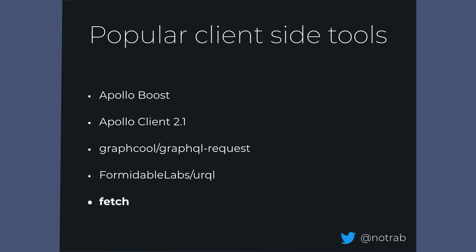On the client side, we have Apollo Boost — a boilerplate for using Apollo Client. Apollo Client 2.1 split everything into separate modules like HTTP link and in-memory caching, which confused people. The community responded quickly and they released Apollo Boost, which puts it all back together in a more composable way. Apollo Client is what I showed with the Query component — you import a Query component, Apollo Client makes a query to the GraphQL server, you hook up the URL, and it handles everything. You can also use bare-bones request libraries like GraphQL Request and Urkel by Formidable Labs.